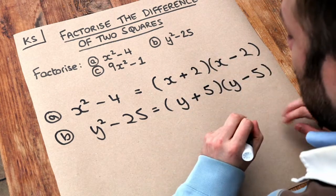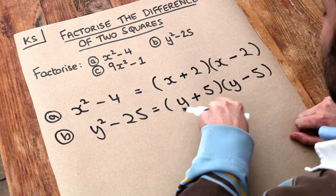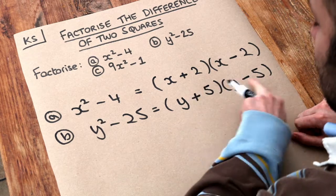And by the way, the order does matter. It would be wrong to write 5 plus y, 5 minus y, because that wouldn't be the same as this.